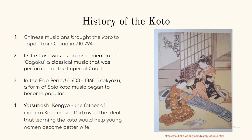For the history of the koto, the koto was brought to Japan by the Chinese in around 700 AD. The first use of the instrument was in the gayaku, a musical performance for the imperial court. In the Edo period, sayaku — a form of solo independent koto music followed with vocal singing — became popular, introduced to the public by Yakushashi Kenjo.